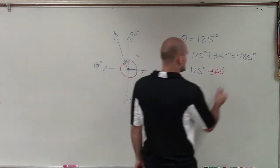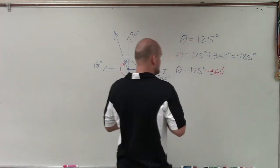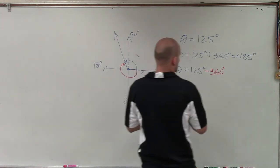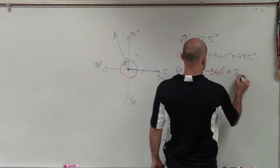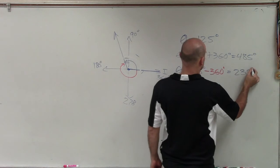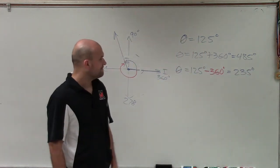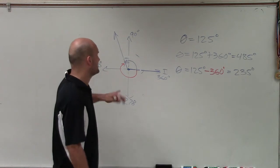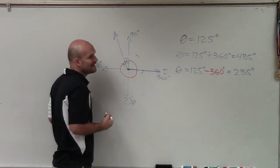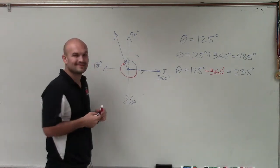And now by subtracting 360 degrees, my final answer is now going to be 235 degrees. OK? So there you go, ladies and gentlemen. That's how you find the smallest positive and negative coterminal angles. Thanks very much.